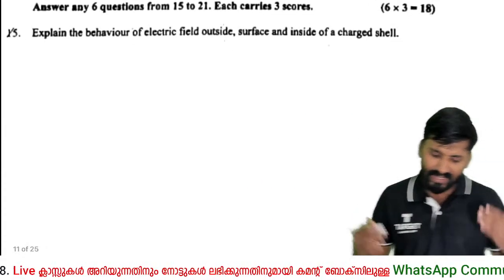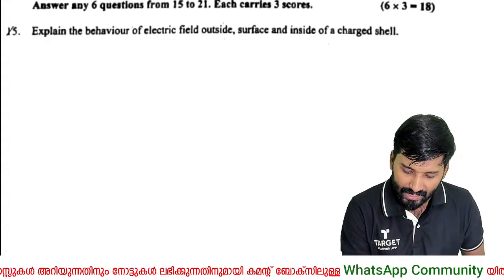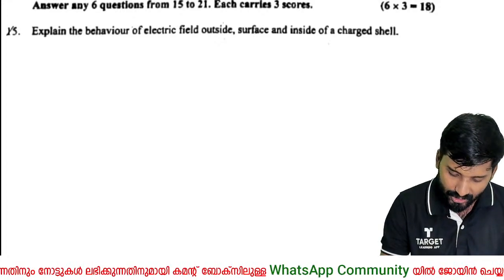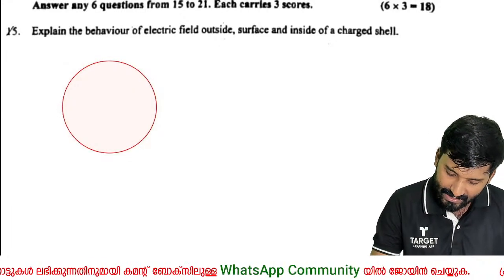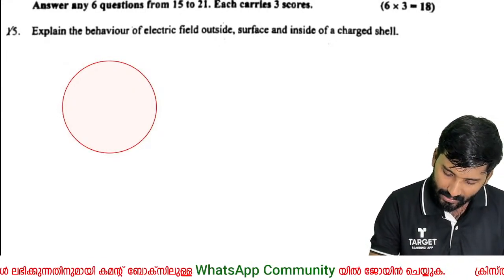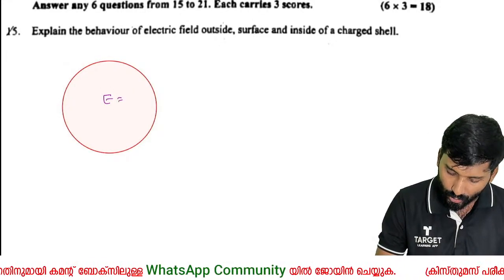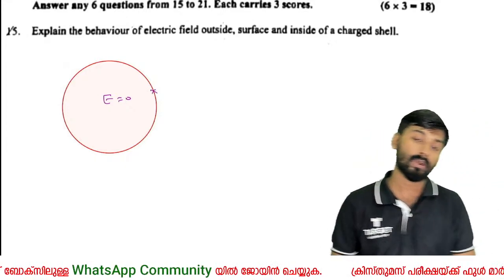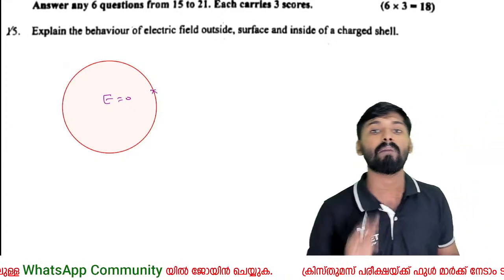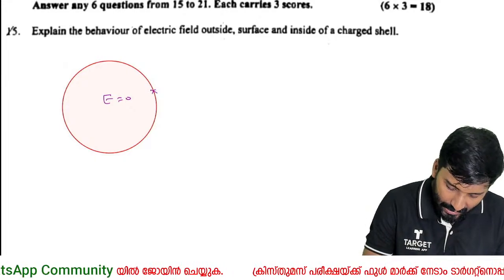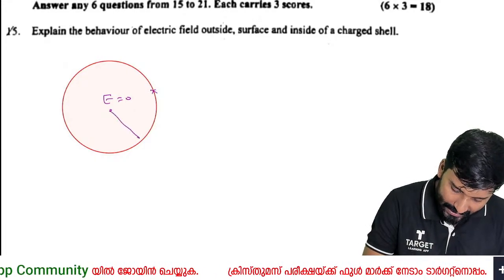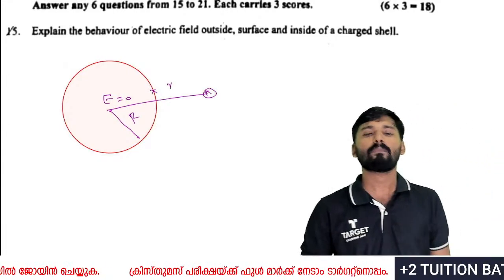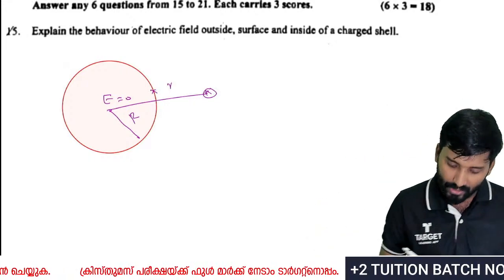Explain the behavior of electric field outside, on the surface, and inside a spherical shell. Inside the shell the electric field intensity is zero. On the surface it is sigma over epsilon-zero, and outside it is kQ over r-squared.